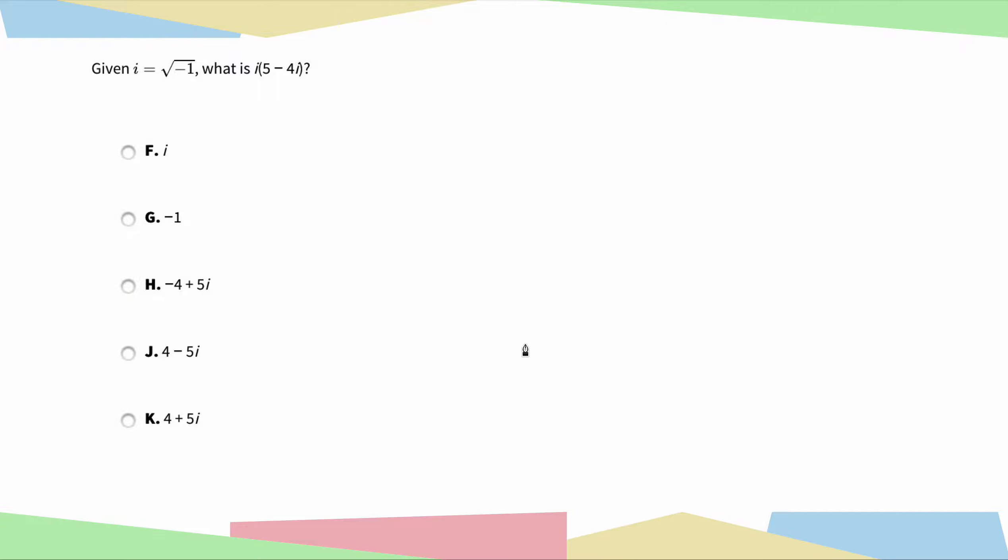Given i equals the square root of negative 1, what is i times 5 minus 4i?